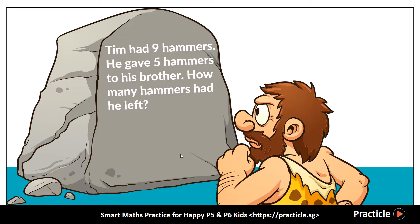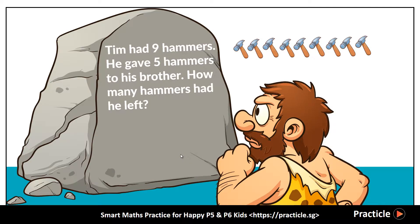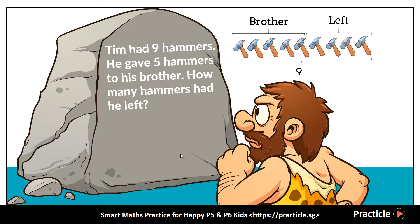Bob the caveman is probably picturing 9 hammers in his head since Tim has 9 hammers. And because he gave 5 hammers to his brother, Bob would probably put 5 of them in one group and the rest in another group — and those were the leftover hammers.